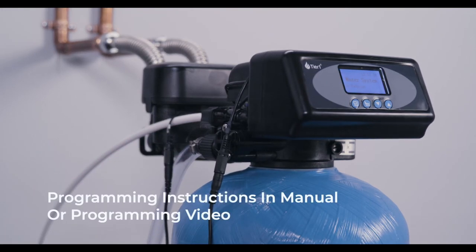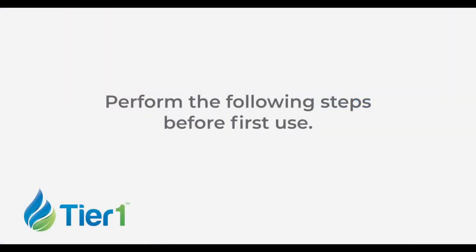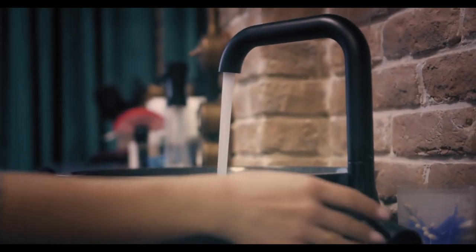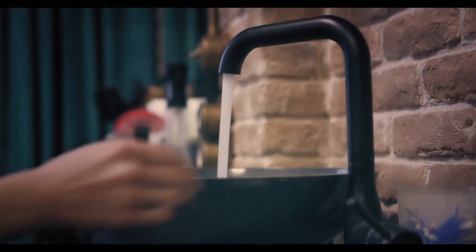Refer to your manual or the recommended video for detailed programming instructions. After the control valve has been programmed, perform the following steps before first use. Go to a faucet, turn it on, and let the water flow until the water runs clear.